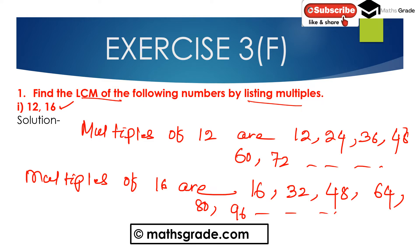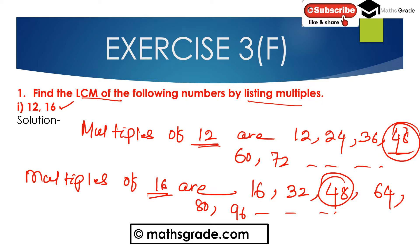Then here we have to find the common multiples between 12 and 16. The common multiples are: 12 is not in the list of 16 multiples, 24 is not there, 36 is not there, but 48 appears in both lists. So the least common multiple of the numbers 12 and 16 is 48.